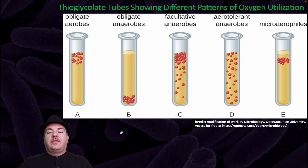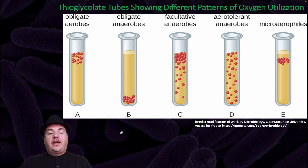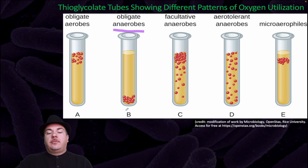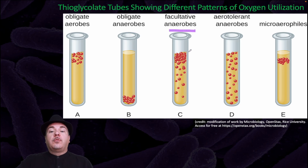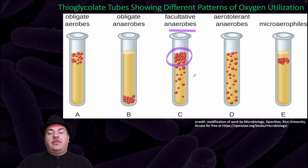Here are examples of different organisms and how they react to oxygen, illustrated by growth patterns in a test tube medium where oxygen penetration decreases with depth. Obligate aerobes grow near the top where oxygen is accessible. Obligate anaerobes grow near the bottom, away from oxygen. Facultative anaerobes grow near the top using aerobic cellular respiration, and also near the bottom using fermentation when oxygen is limited.